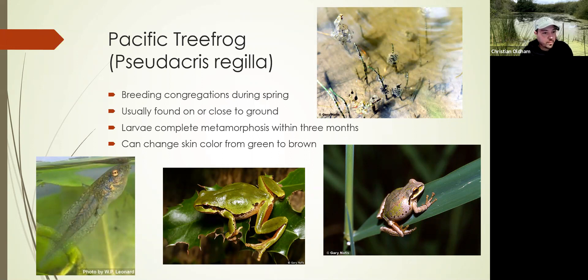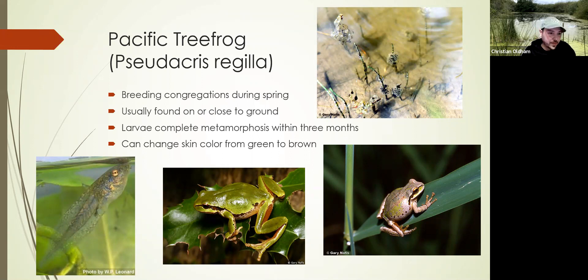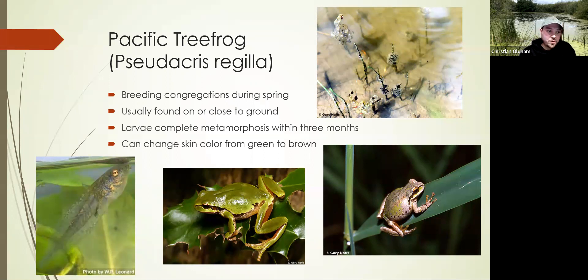Once they do metamorphose and become adults, they can actually change their skin color. It's a very similar process to how chameleons work — it's not based on their mood, it's based on the temperature and their stress level. You can see they can go from green to brown to even sometimes shades of kind of a red. It's not a fast process, but it is very cool to see. That's why you tend to see so many different colors of them. If you poke around the wetland, you'll see lots of green, brown, and everything in between. They do have some variation in terms of this line down the side — it can be spots or lines.